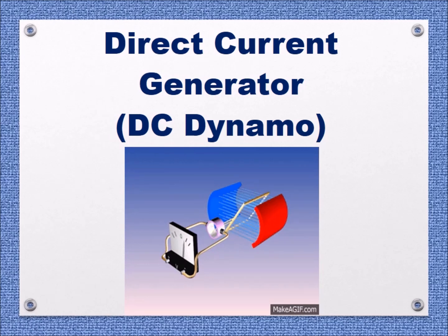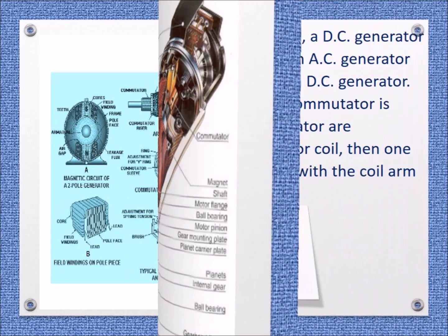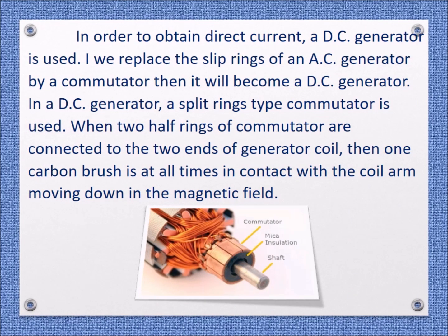Direct current generator — DC dynamo. In order to obtain direct current, a DC generator is used. We replace the slip rings of an AC generator with a commutator and it becomes a DC generator. In a DC generator, a split-ring type commutator is used.